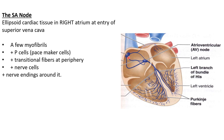Nerve cells can influence the SA node activity. The transitional fibers in the peripheral region have different properties from the surrounding muscle — they have less conducting and more contractile particles. The fully contractile cells are the brown cells.